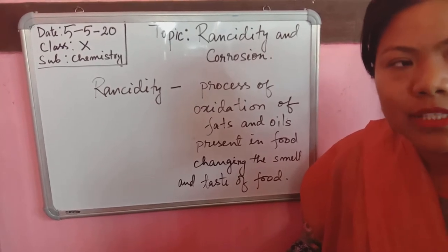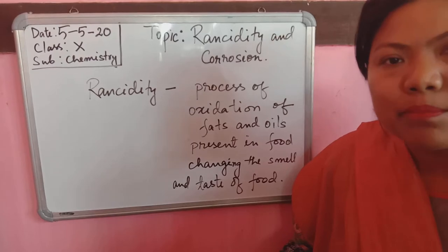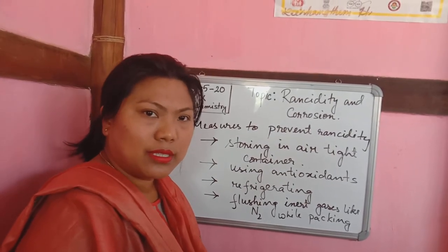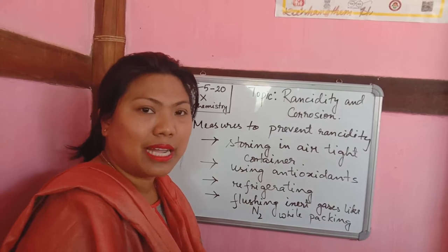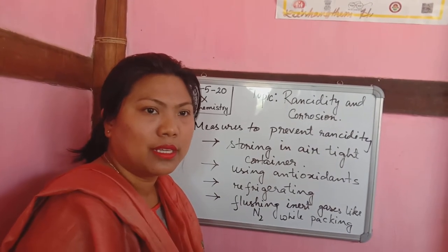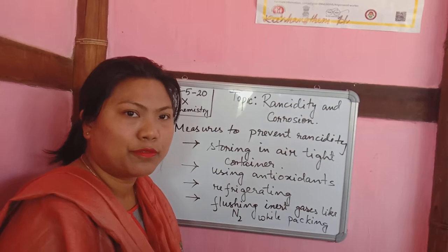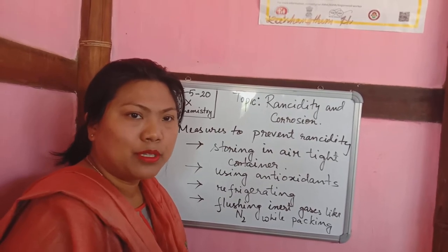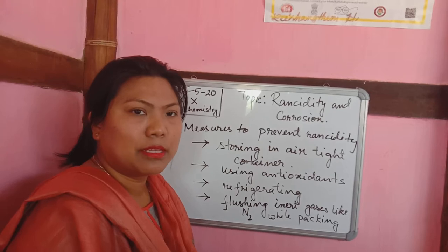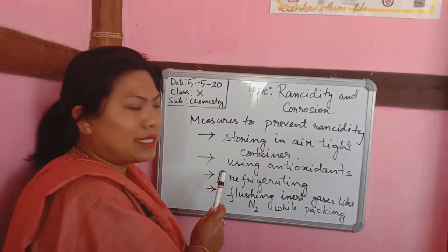Examples: after two or three days your fried fish or meat will be found smelly and the taste will not be good — these are all examples of rancidity. Now, rancidity is not a desirable phenomenon; it is undesirable. We want to prevent it because our food may spoil and it causes losses to us. So we want to protect our food from rancidity, and we should take up some measures to prevent it.